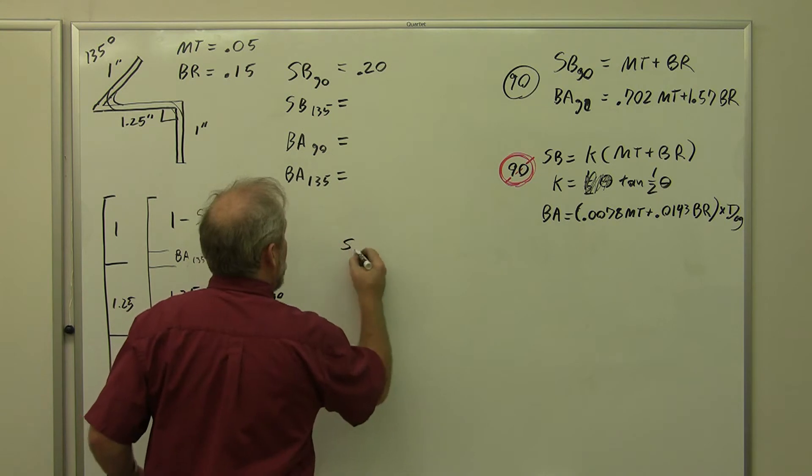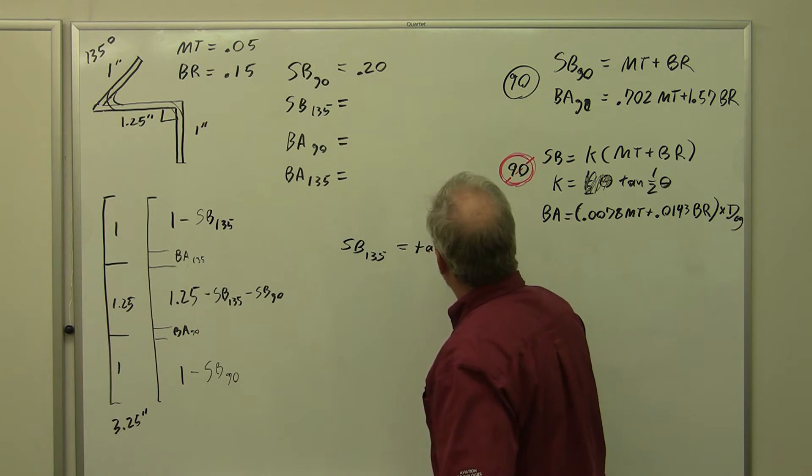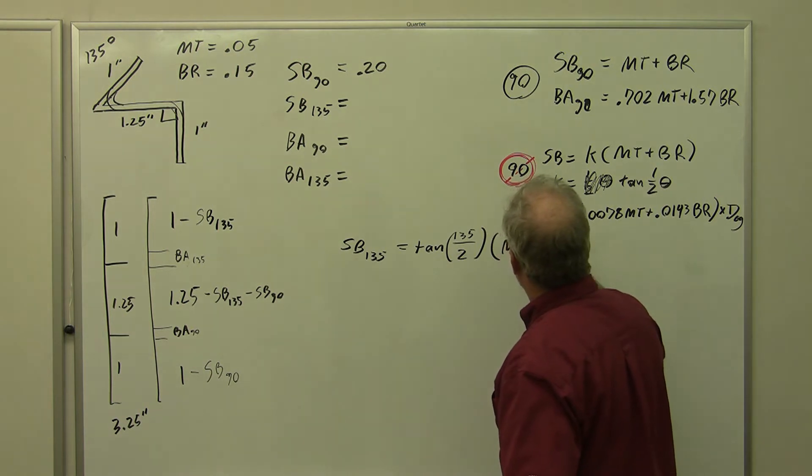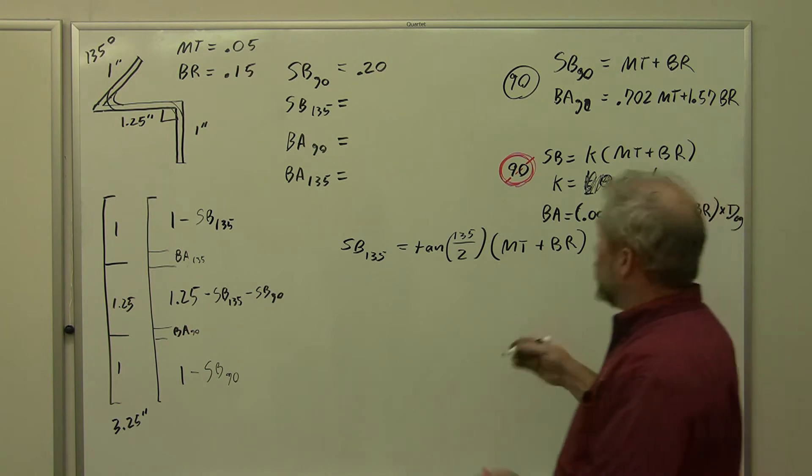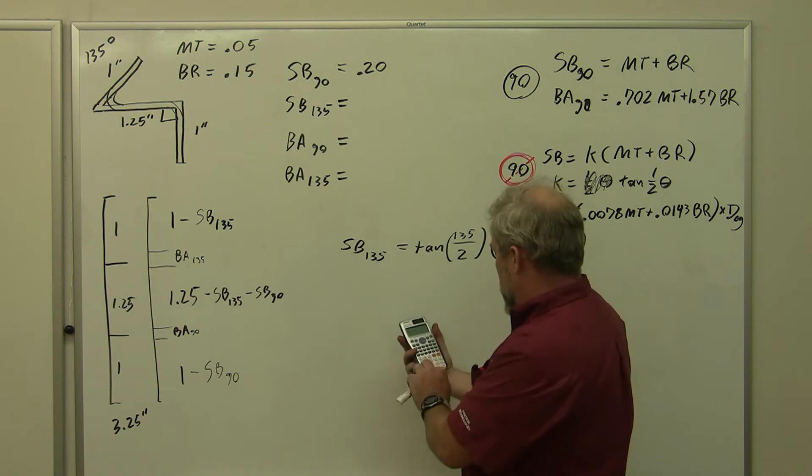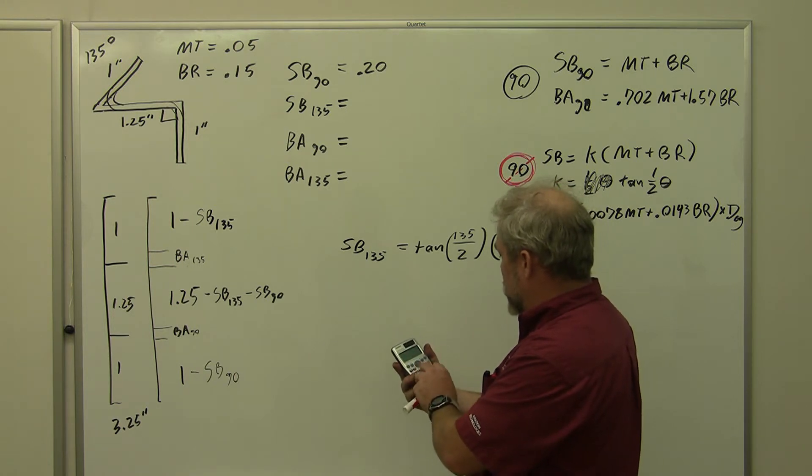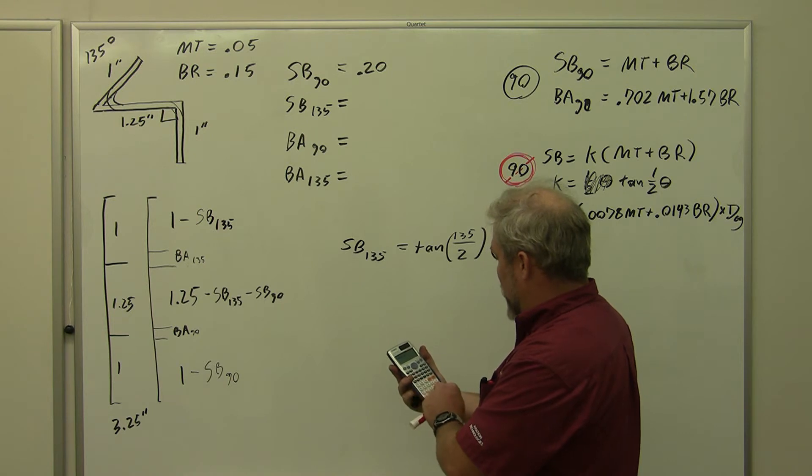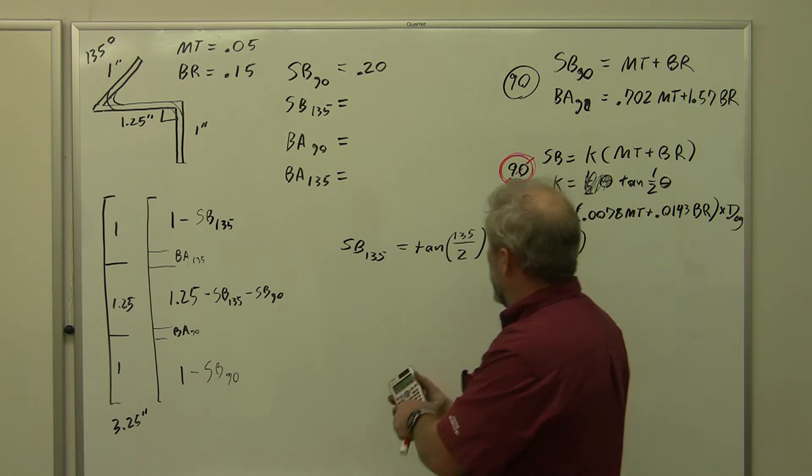Here we are: setback 135 equals tangent of 135 over 2 times material thickness plus bend radius. Let's calculate what the K is. 135 over 2 is 67.5, so tangent of 67.5 gives me a K value of 2.414.